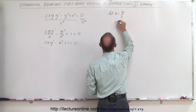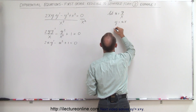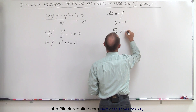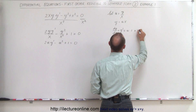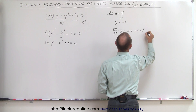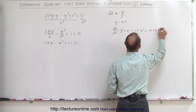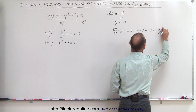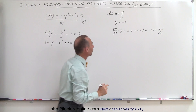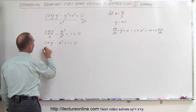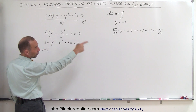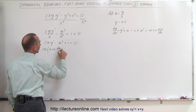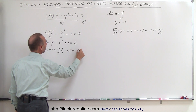Here we write y equal to u times x, so dy/dx, which is y prime, equals the first times the derivative of the second plus the second times the derivative of the first, which gives us u plus x·du/dx. We substitute that in for y prime, so we get 2u times (u plus x·du/dx) minus u squared plus 1 equals 0.